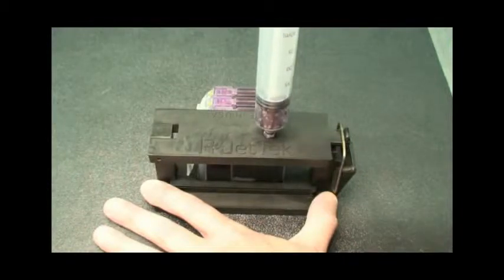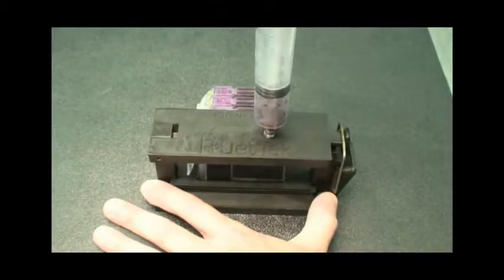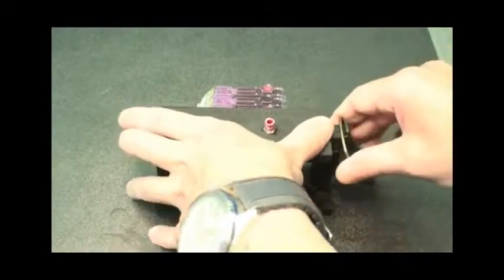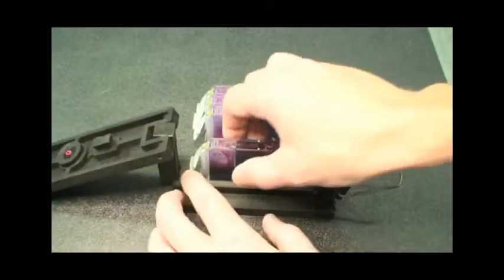After the syringe is empty and all the ink is into the cartridge, pull back slightly on the syringe once more and release to relieve any pressure. Now you are ready to move on to the next cartridge.